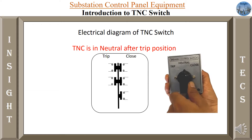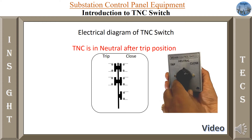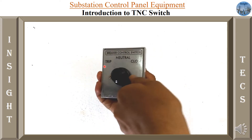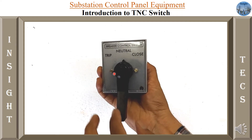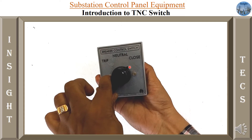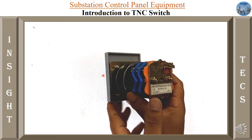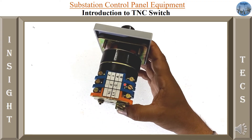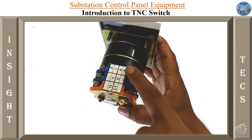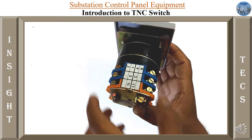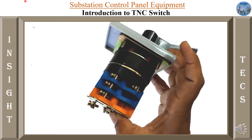Now let us see a video showing how an actual TNC switch is and how it operates. As you can see, this is a trip-neutral-closed switch — a breaker control switch. Using the handle, we can move it towards the trip position, bring it back to neutral, then move it towards the closed position, and it comes back to neutral. Neutral is its normal position. On the back side, you can observe the NO contacts for each of the three positions: trip, neutral, and closed.